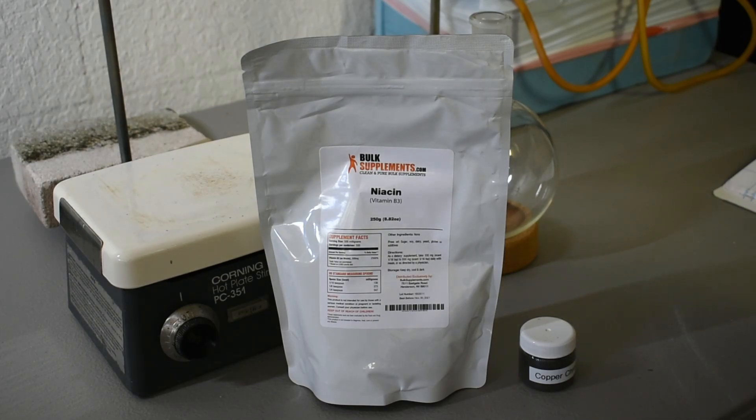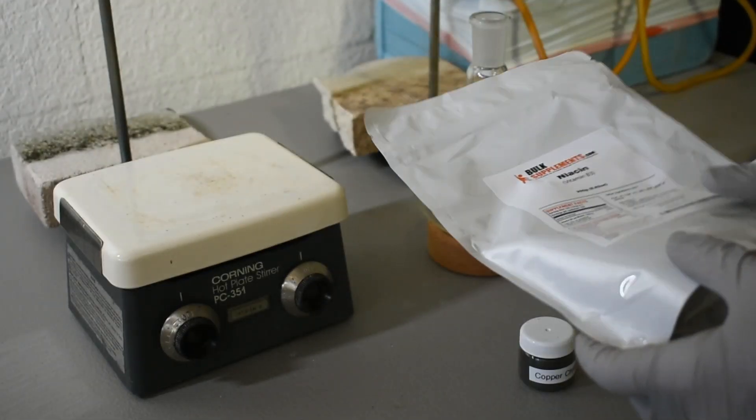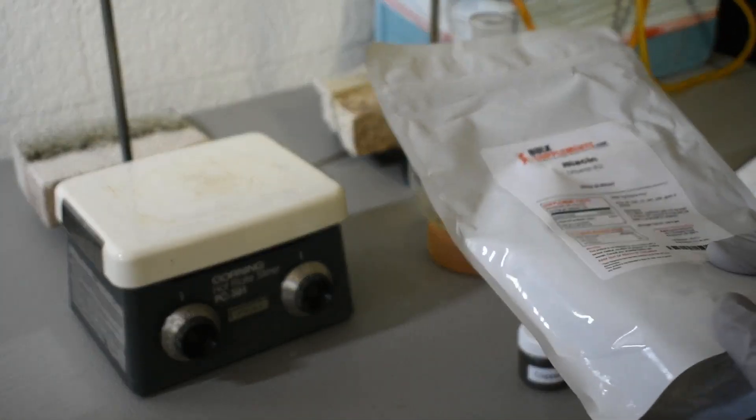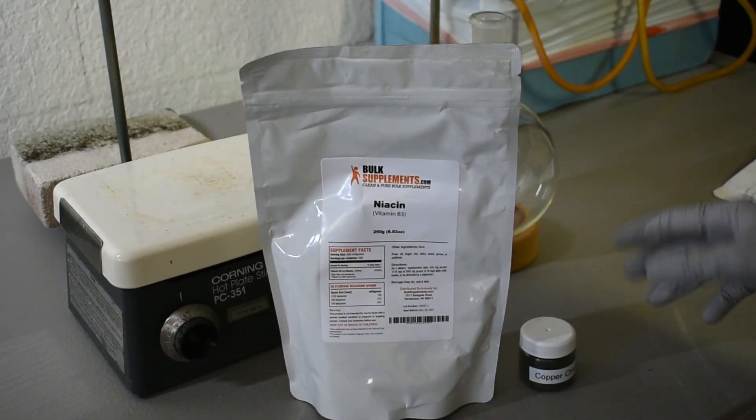This is a pretty simple synthesis, so I'm not going to go into depth. It'll probably be a short video. I bought 250 grams of niacin and did my stoichiometry for 250 grams, but we'll see how much actually ends up being in here and I might have to adjust my calculations.